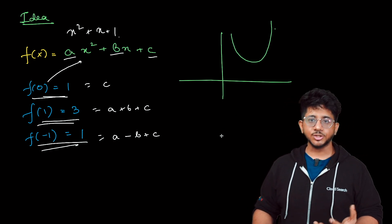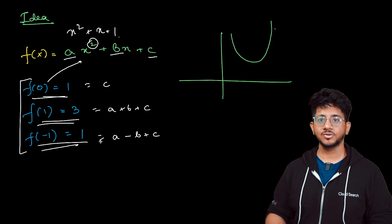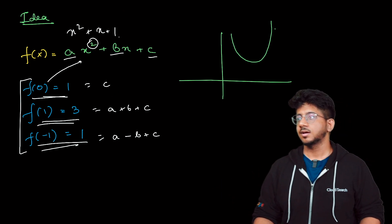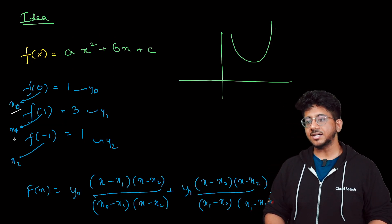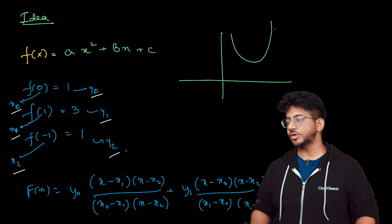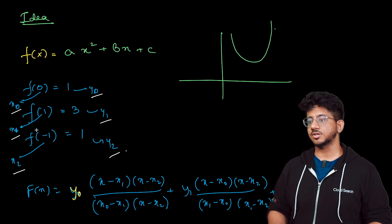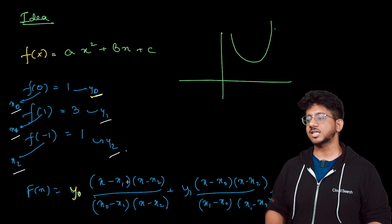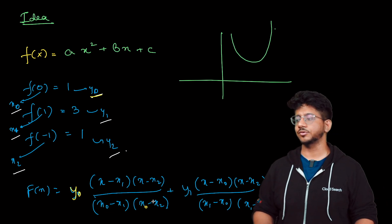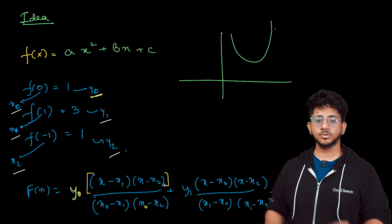That's the general idea Lagrange interpolation uses: you can uniquely identify a polynomial of degree two with three x,y values — inputs and outputs. So basically you have x₀, x₁, x₂ and y₀, y₁, y₂, and there's a bunch of terms you can use: your function is nothing but y₀ multiplied by (x - x₁)(x - x₂) divided by (x₀ - x₁)(x₀ - x₂). That's the main Lagrange interpolation idea — we'll talk about it in detail.